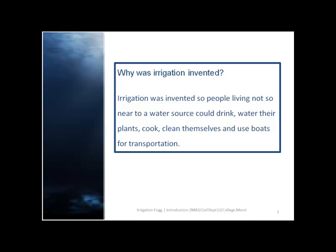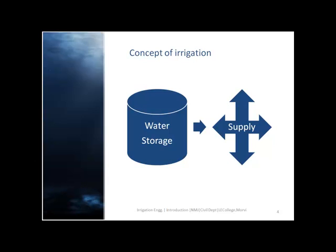Why was irrigation invented? Irrigation was invented so people living not so near to a water source could drink, water their plants, cook, clean themselves and use boats for transportation. The figure shows the concept of irrigation. The water is stored in a storage tank and delivered or supplied to each and every direction where it is required, for purposes like agriculture, inland navigation, etc.